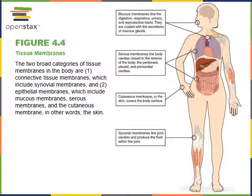Serous membranes line our ventral body cavities. There is the peritoneal membrane lining the abdominal cavity, the pleural membrane lining the lungs, and the pericardial membrane lining the heart. Serous membranes have two layers: a parietal layer and a visceral layer. The parietal layer lines the cavity wall and the visceral layer lines the organ.